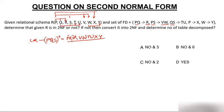Now we have the candidate key PQS. The prime attributes are P, Q, S — the attributes which are part of the key. The non-prime attributes are R, T, U, V, W, X, Y — the attributes which are not part of the key.